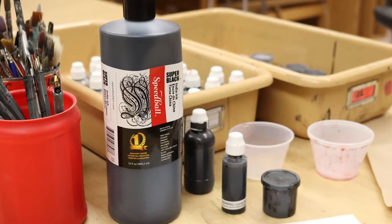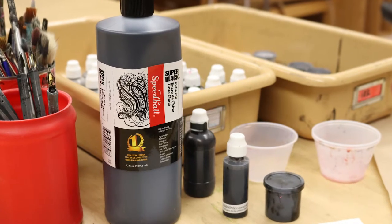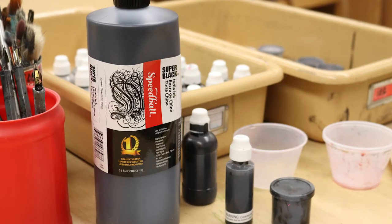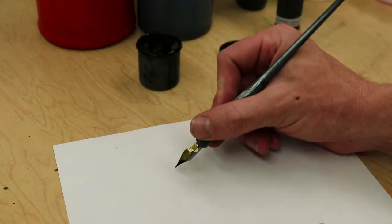We have access to India Ink in the classroom, which is a permanent ink. It will stain and ruin your clothes, and it will also stain and ruin the clothes of the people around you if you're careless. Once it's down on paper, it's not going to go anywhere.